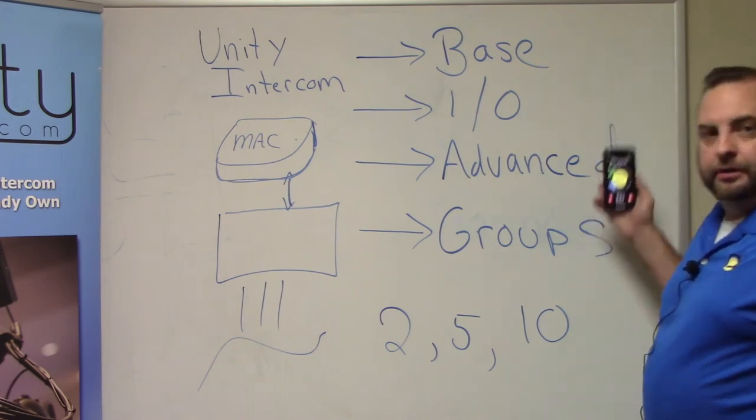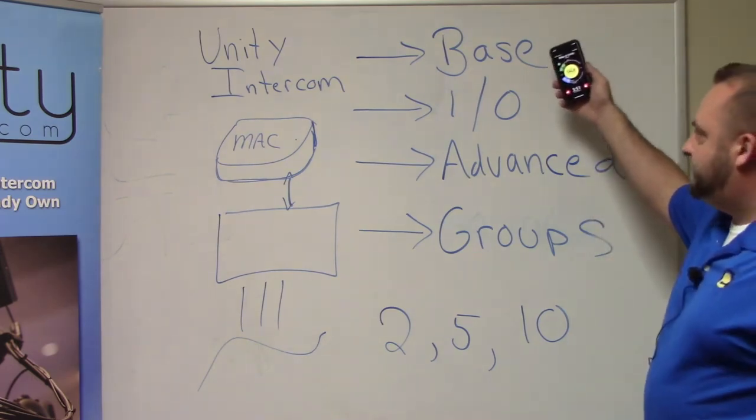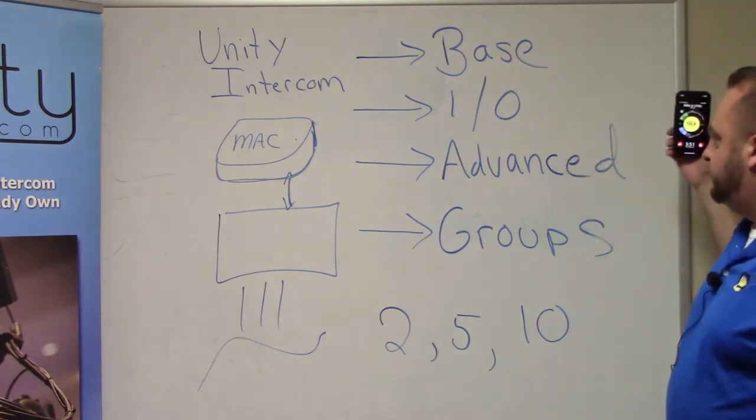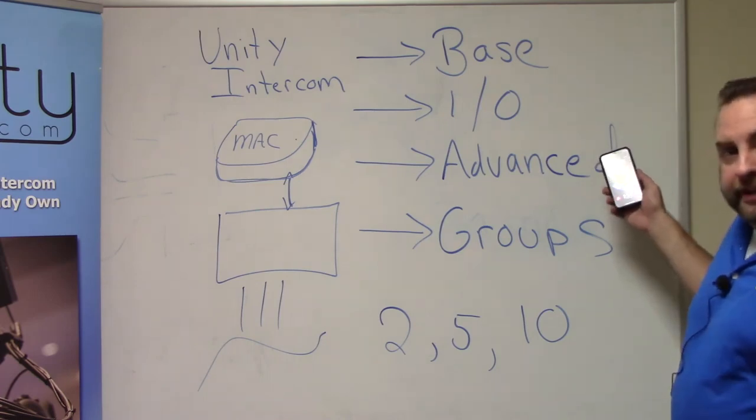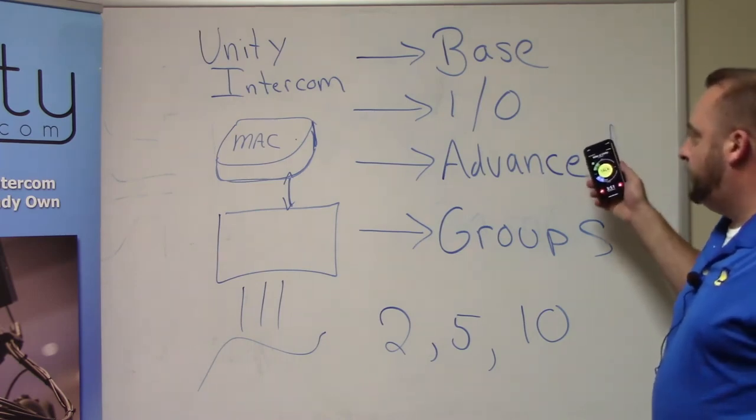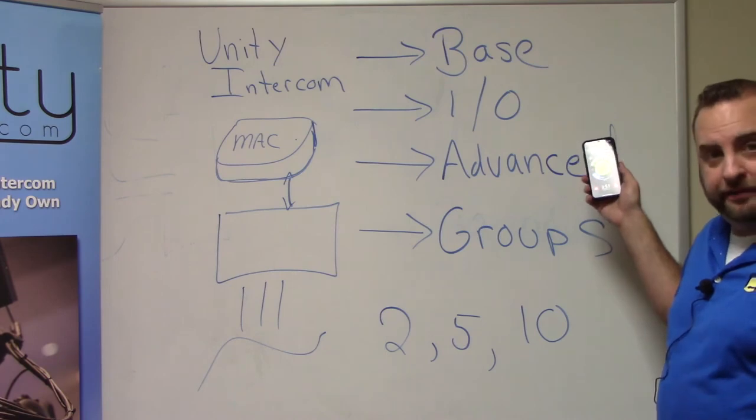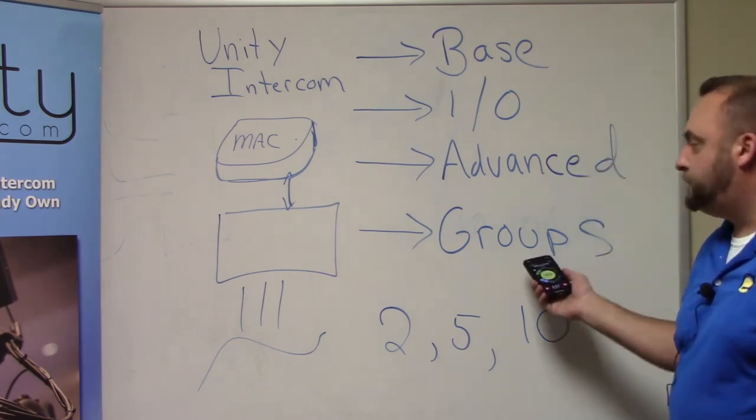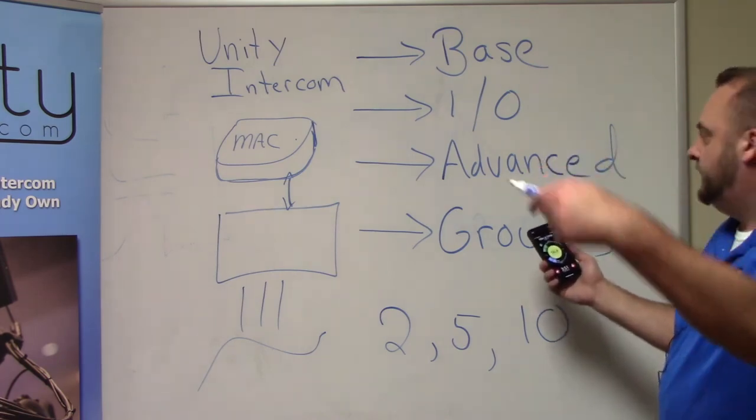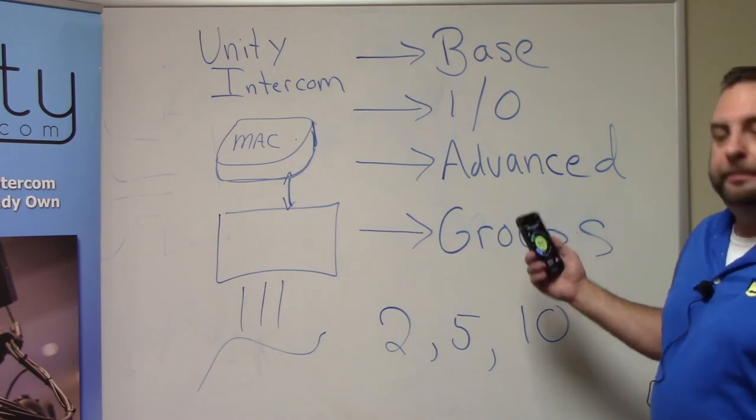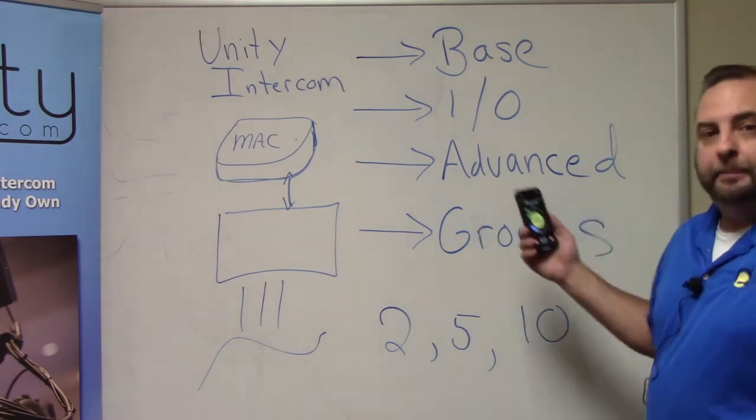So these are the major four: your base license, your IO license, advanced program feeds. Remember that gives us 64 incoming program slash IFB feeds and the groups option, which takes us to that next level of having more than one group and being able to define our people out like that.